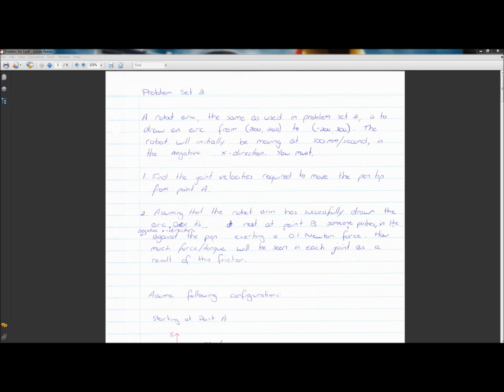So to the actual problem set itself. We've got a robot arm, the same as used in problem set two. A revolute, revolute, with link one being 300 mils and link two being 200 mils. And it's required to draw an arc from 300, 200, point 300, 200, to negative 200, 300. The robot will initially be moving at 100 millimeters per second in the negative x direction.